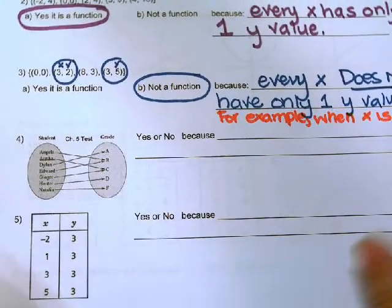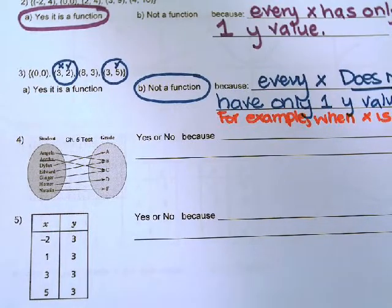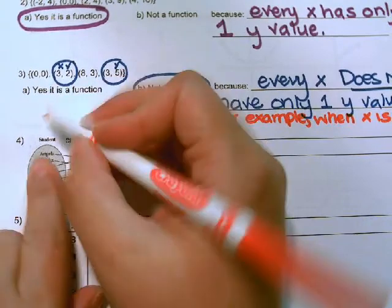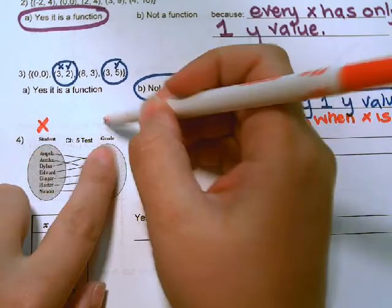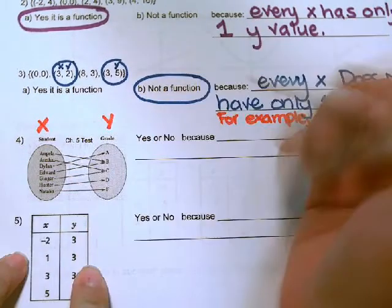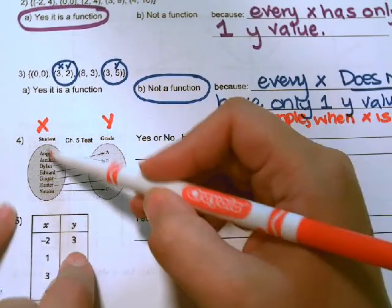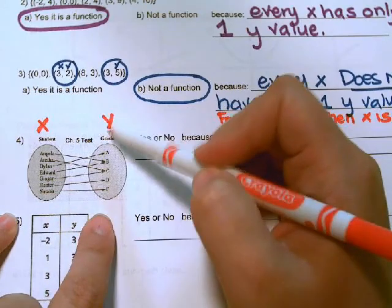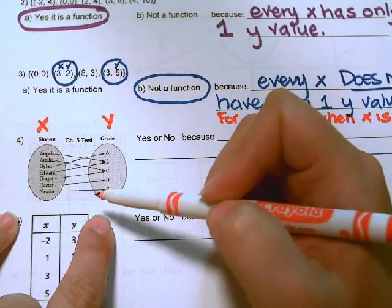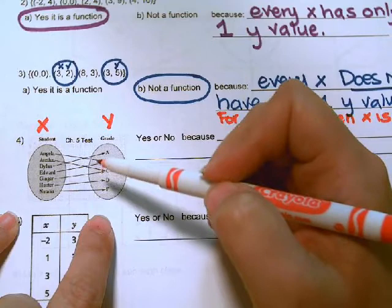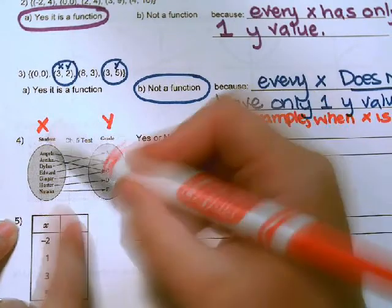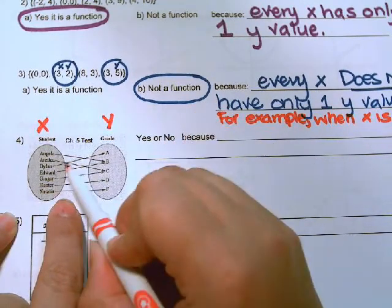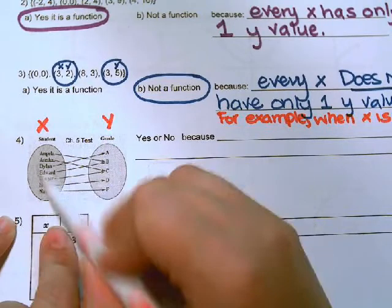In the next example, we are given a Venn diagram. When we're given a Venn diagram, this is always the input, I'm going to think of it as X, and this is always the output. I want to see, does every student have only one test grade? In this class, you aren't allowed retakes. So every person here only has one grade. So this would be a function.